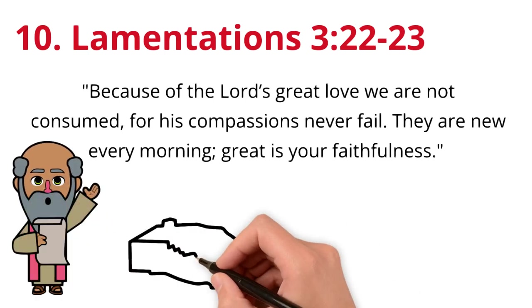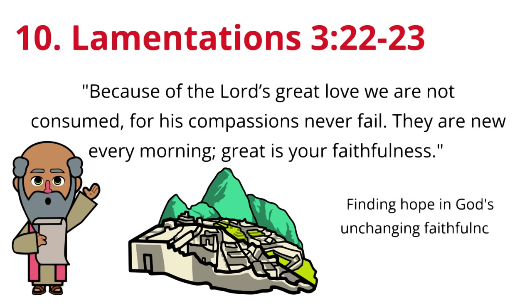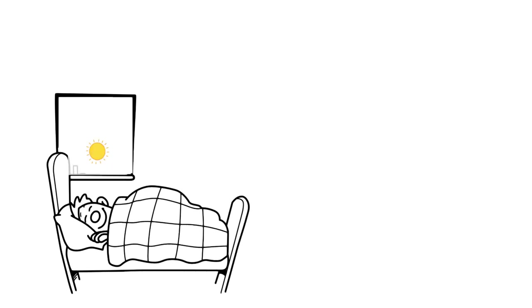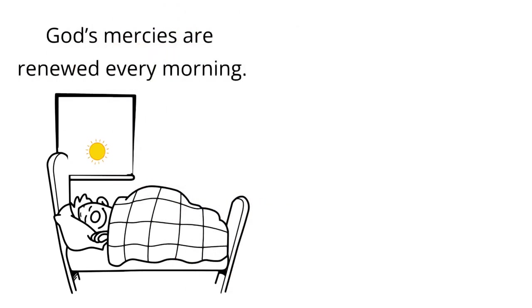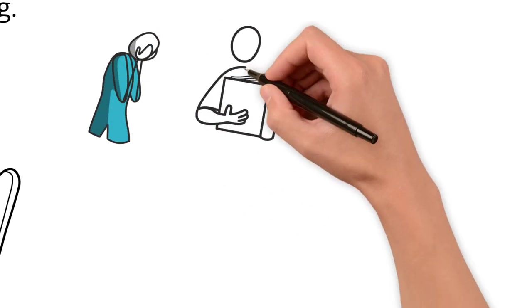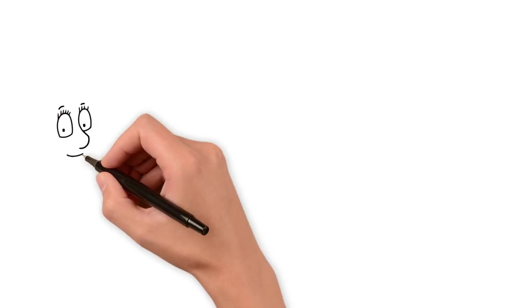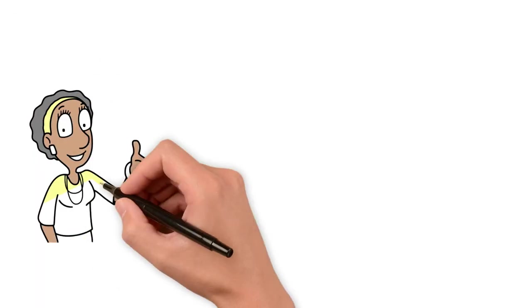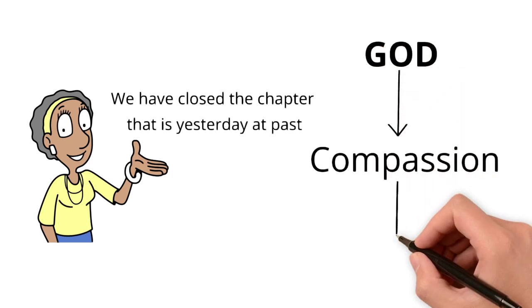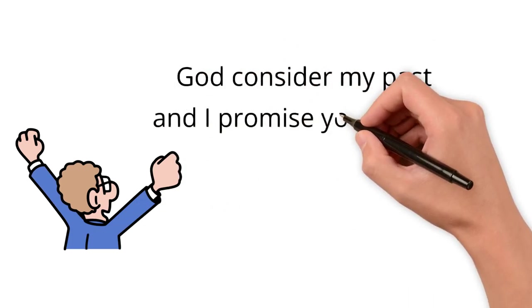Context: The prophet Jeremiah writes these words amidst the ruins of Jerusalem, finding hope in God's unchanging faithfulness despite the nation's suffering. Tip: Start each day with the assurance that God's mercies are renewed every morning. Real life example: Establish a morning routine that includes prayer or reading scripture, focusing on God's faithfulness and love. Let this be a time to remember that every morning we start fresh. We have closed the chapter that was yesterday and the past. God's compassion on what you're going through is endless. Remember to pray, God, consider my past, and I promise you He will.